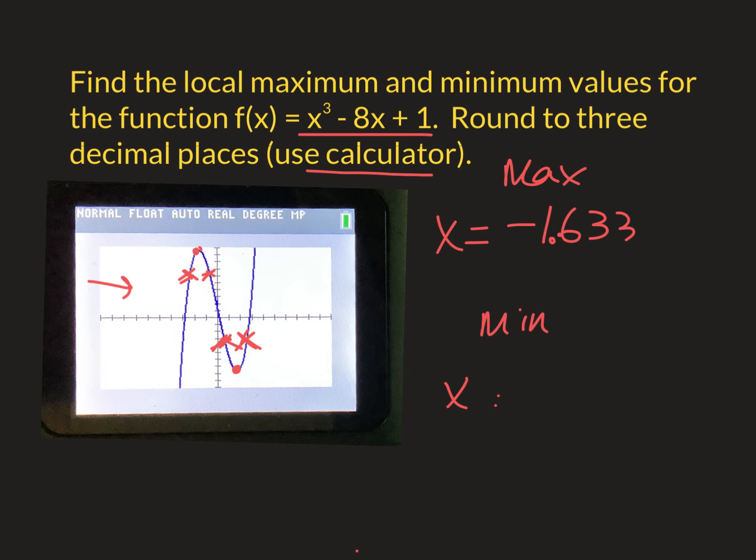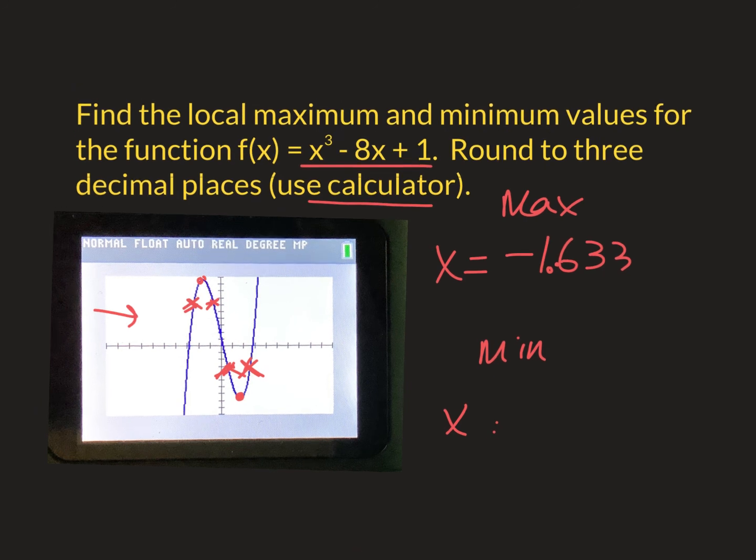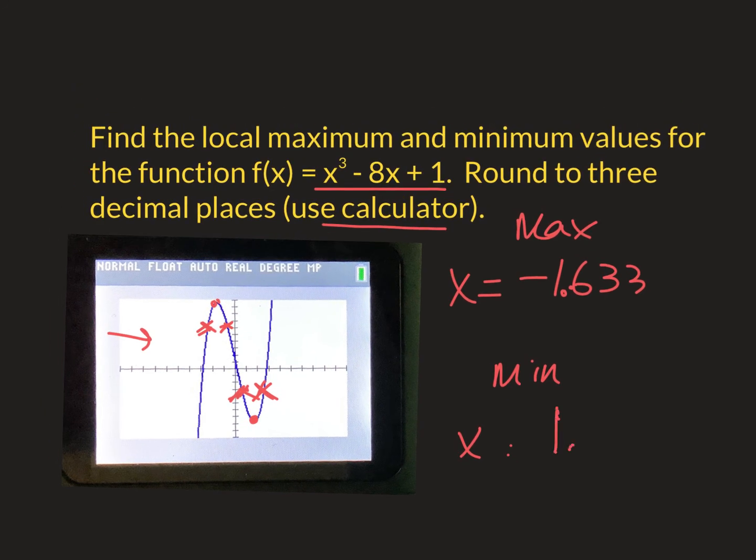Left bound. Trace to the same place. Right bound. Trace to the same place. Guess. Enter. And I get this one point. I got positive 1.633.